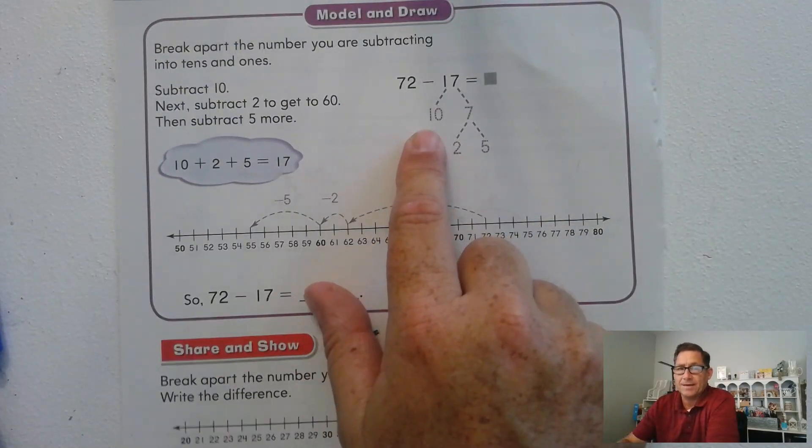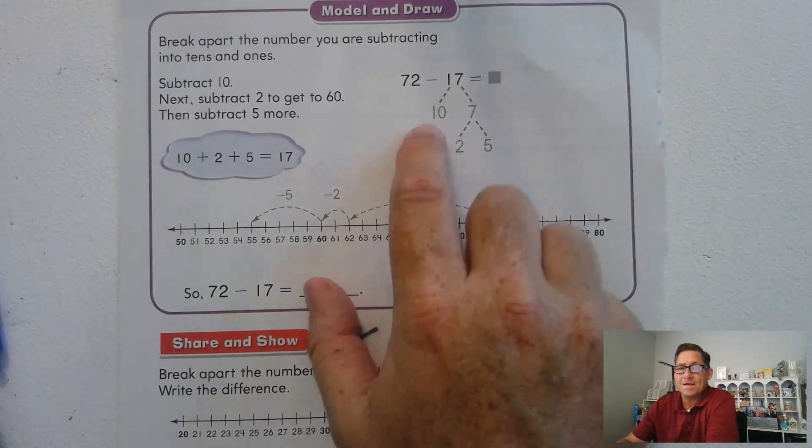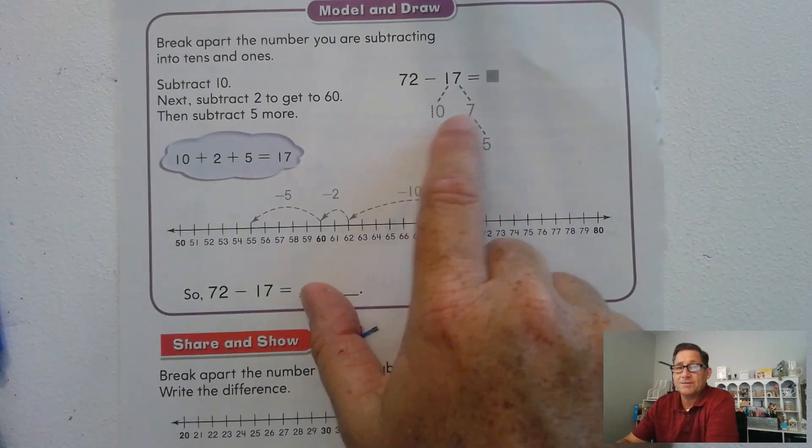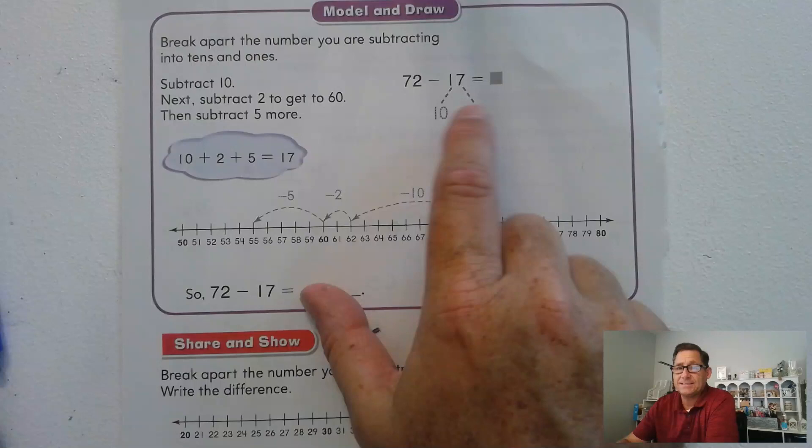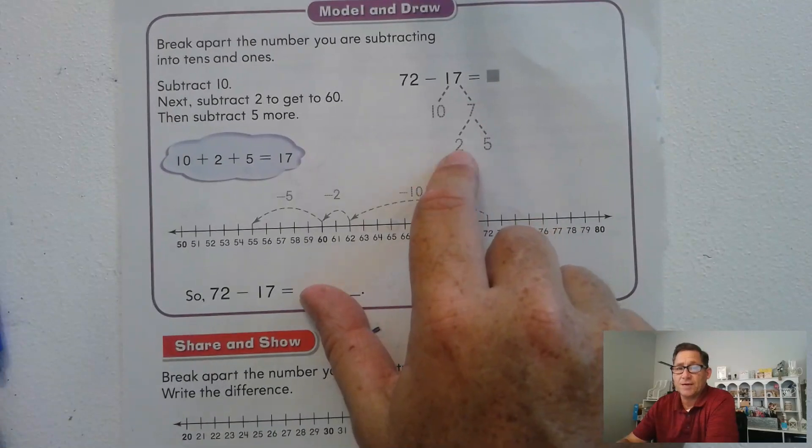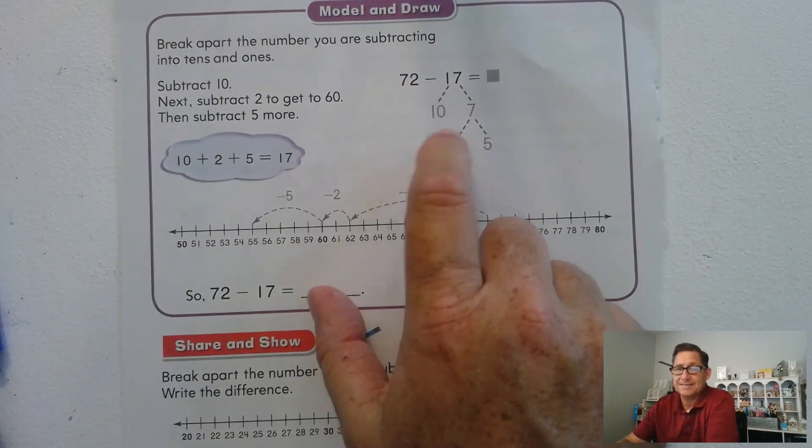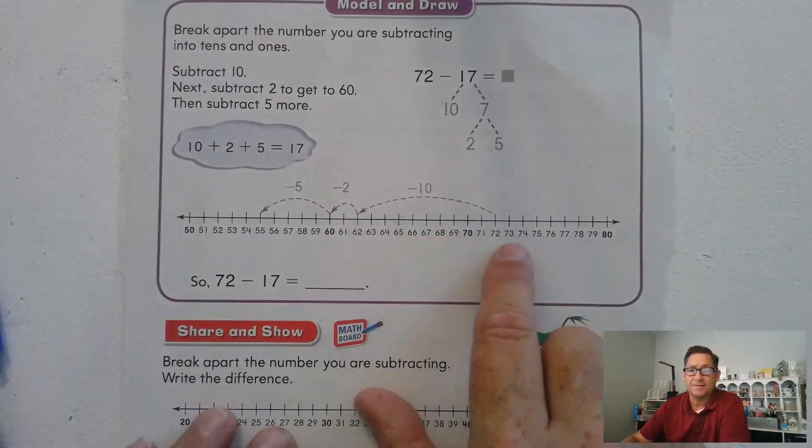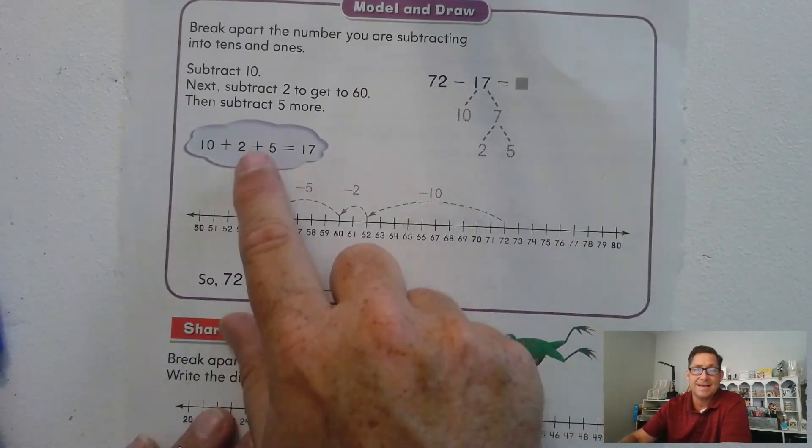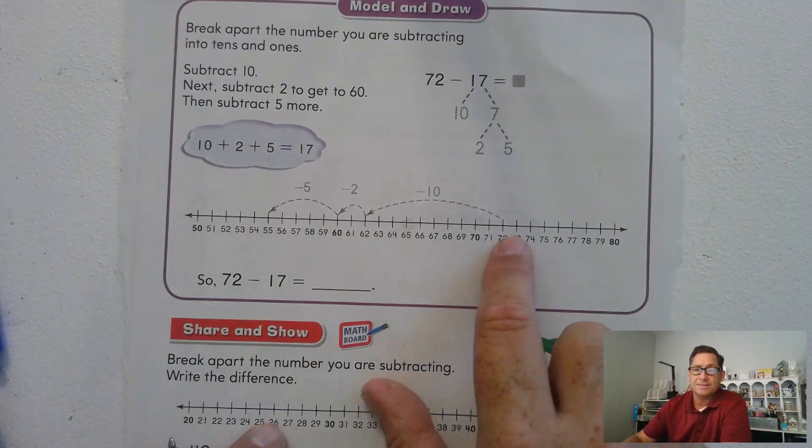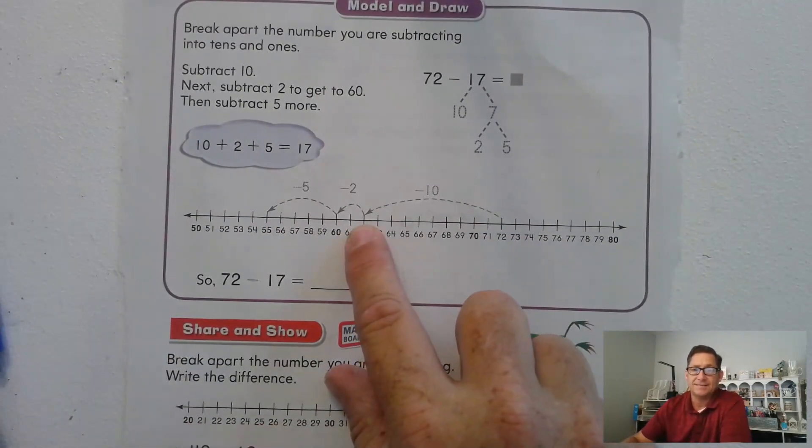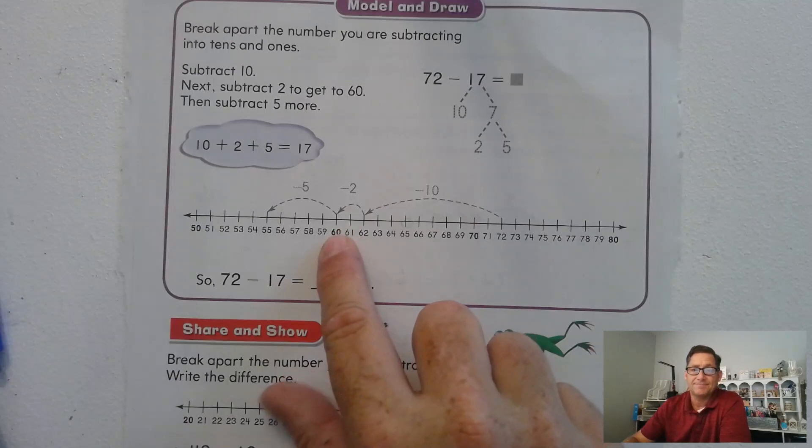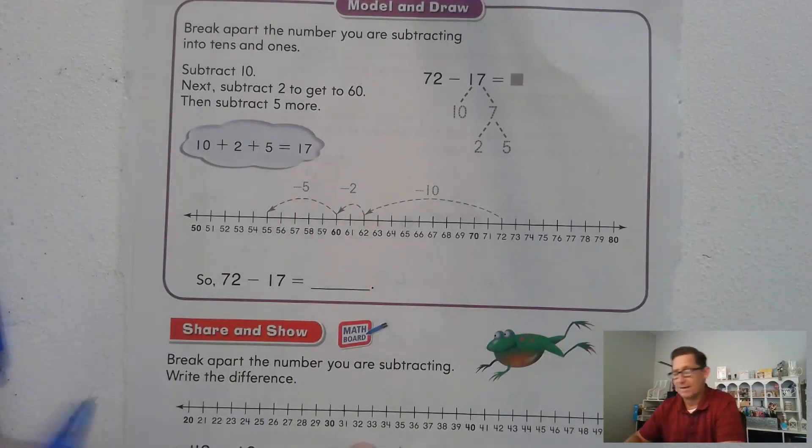So 72 take away 10 would be 62. Now we still have to take away 7 from the 17. So 62 minus 7. We'll subtract 2 from the 62 to get 60. And 60 minus 5 is 55. So they broke apart 17 into 10 plus 2 plus 5. 72 minus 10 puts us at 62. Subtracting 2 more puts you at 60. Subtract final 5 and we'll wind up at 55.